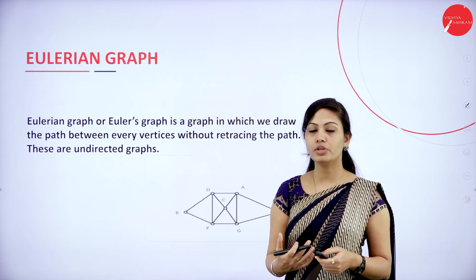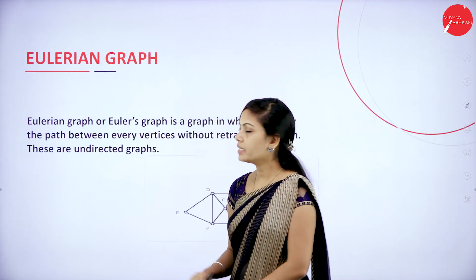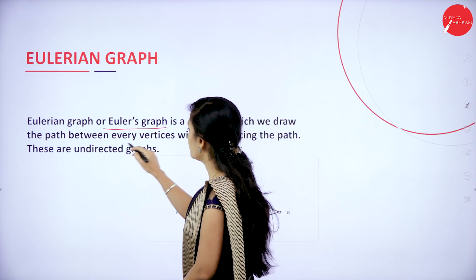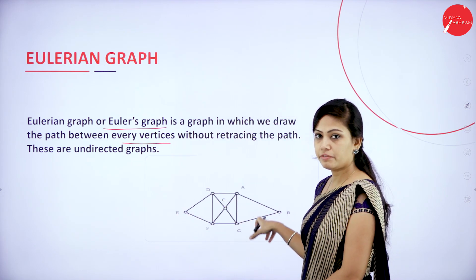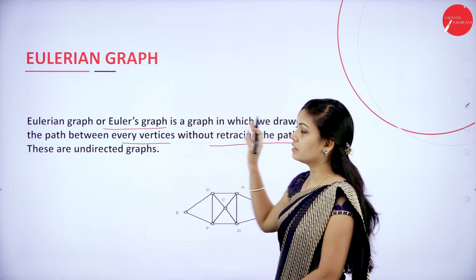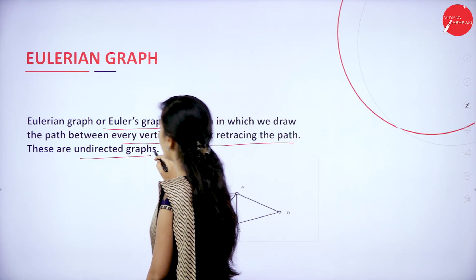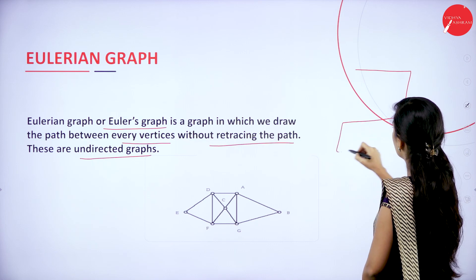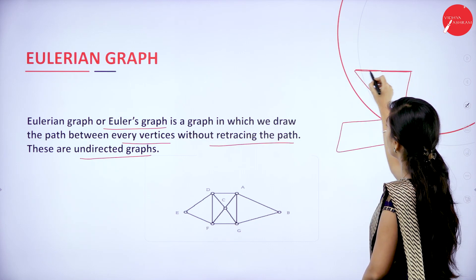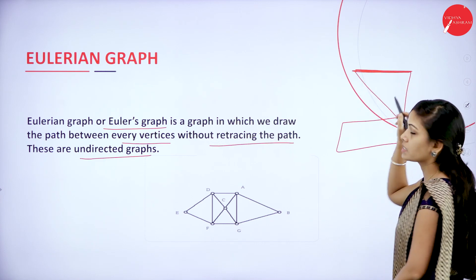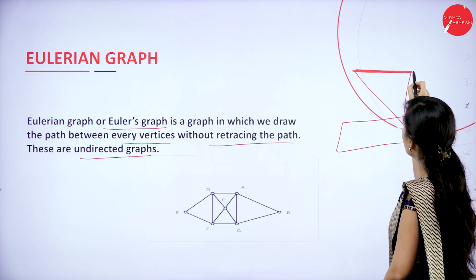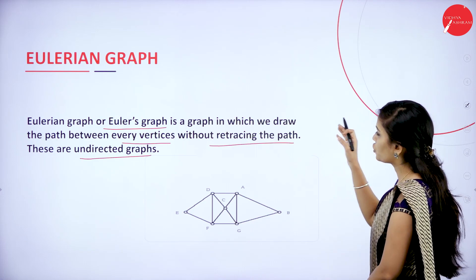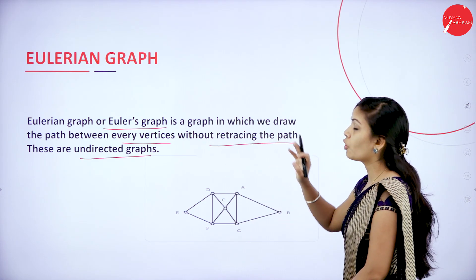So what is this Euler's or Eulerian graph? An Eulerian graph is a graph in which we draw the path between every vertex without retracing the path. These are undirected graphs. That means without retracing the graph, we should not use an edge again.